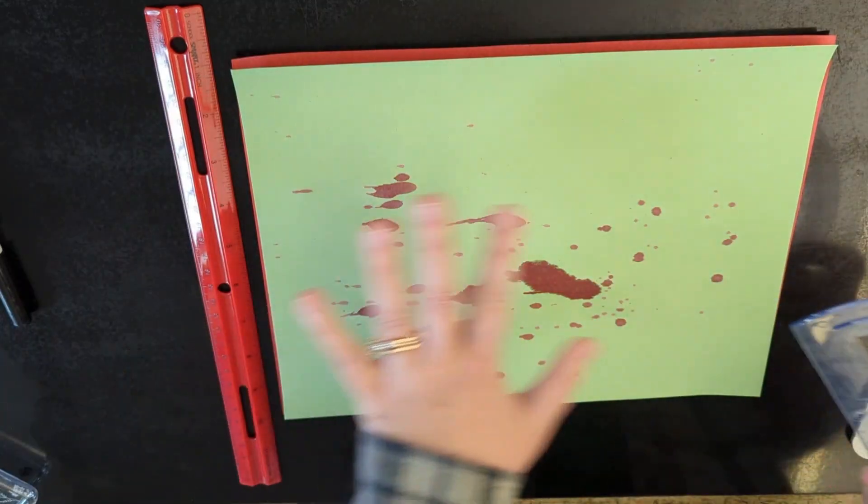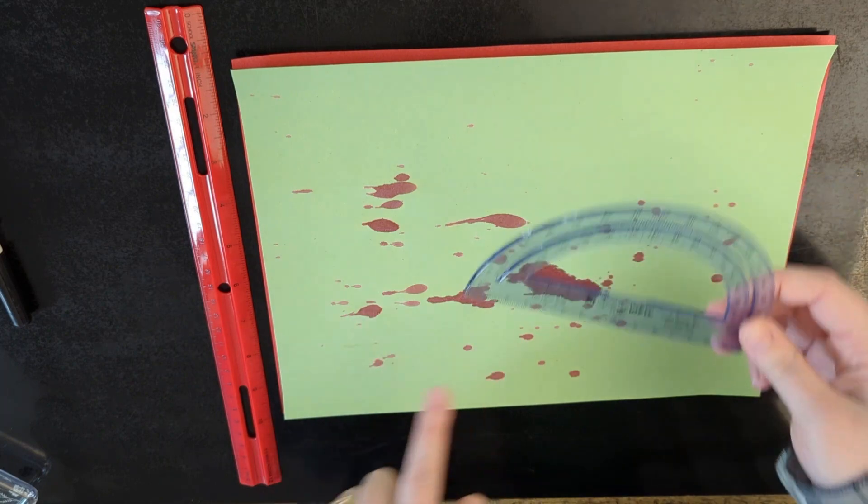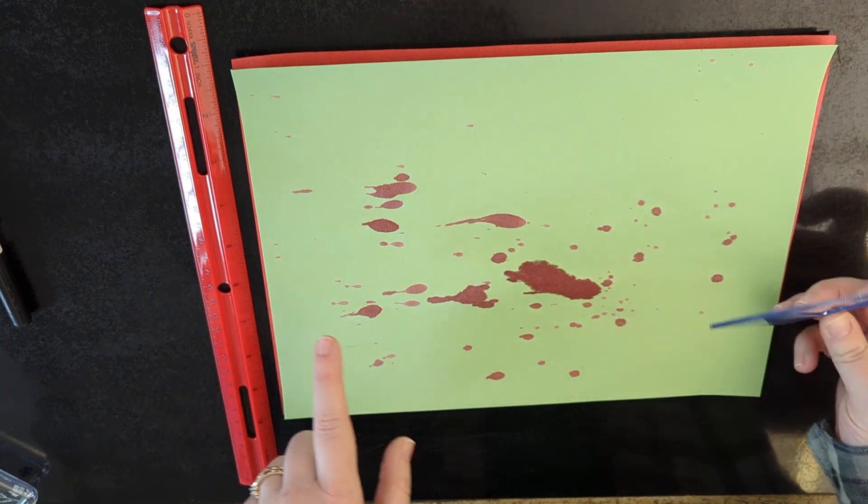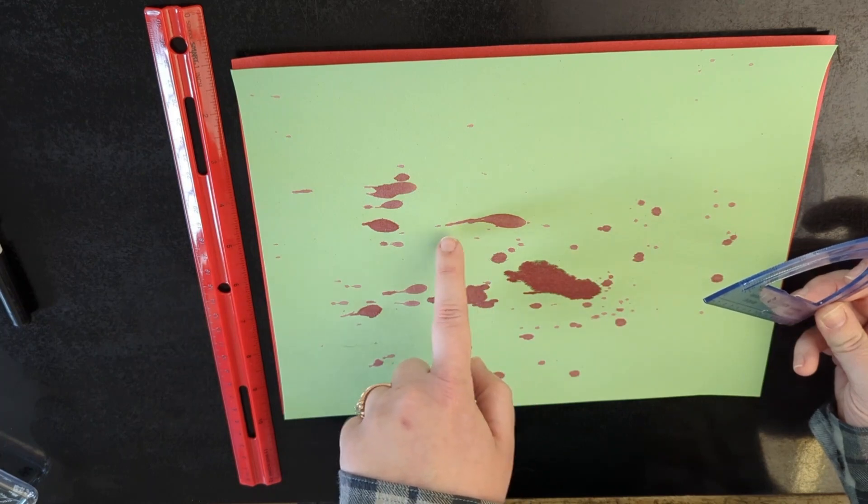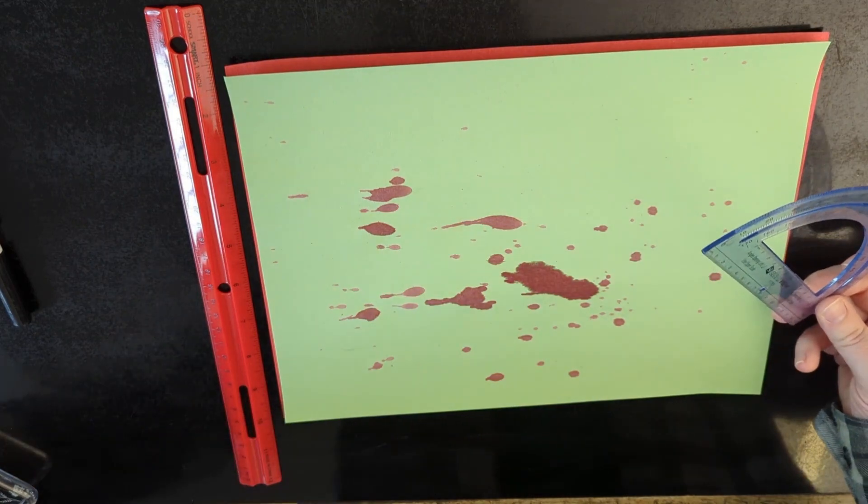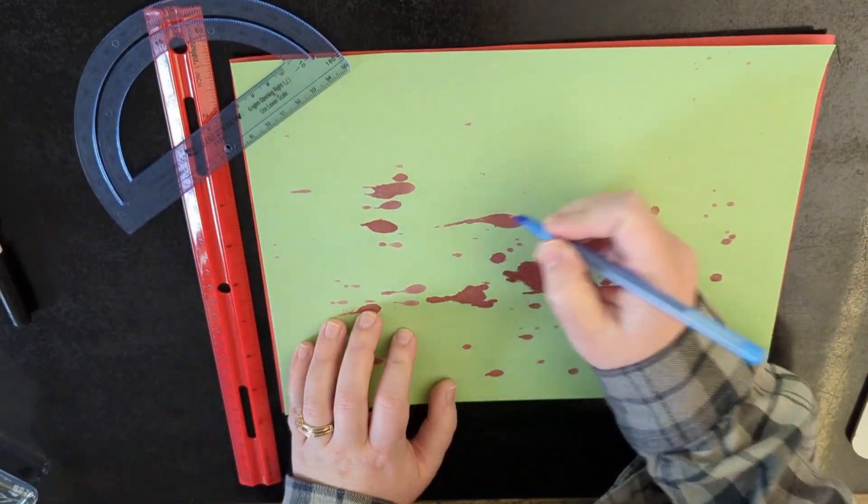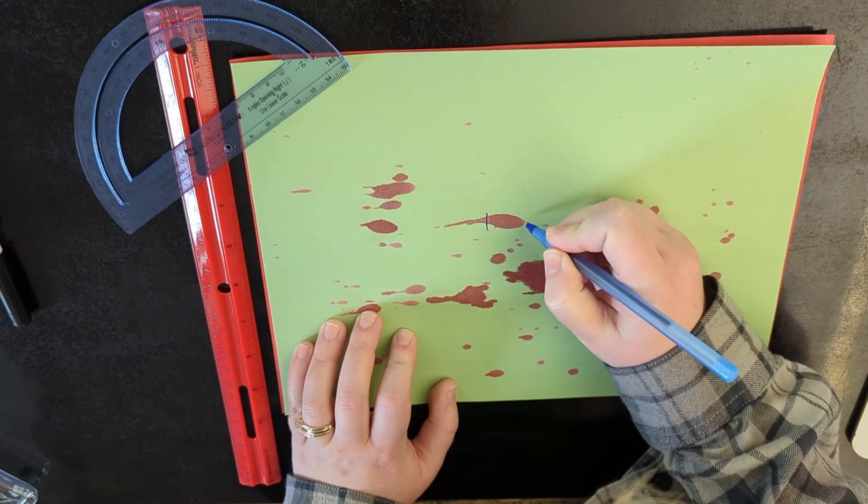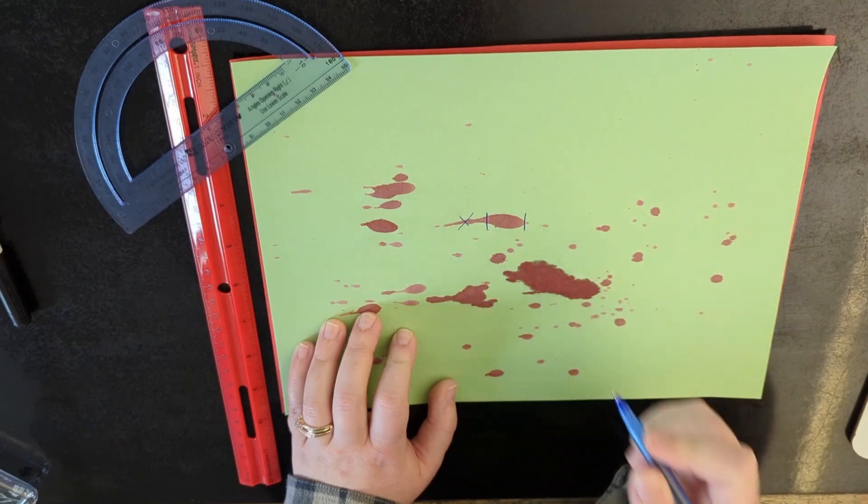Next you're going to find a blood drop of your choice and when you're measuring a blood drop it's important to acknowledge that we're not going to be measuring the tail of it. We just want the body of the blood drop. When measuring the body I like to box off the main portion so I know not to include the tail.